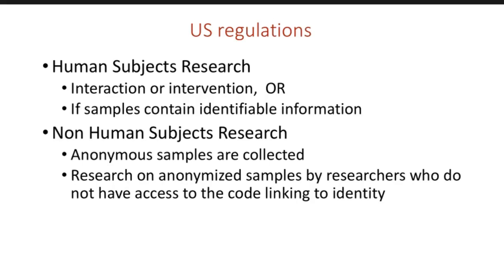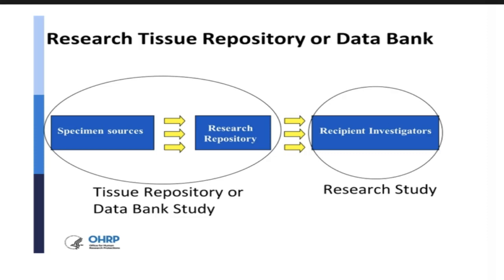Now under the current US regulations, human subject research involves an interaction or an intervention with a subject, or if the researcher obtains samples containing identifiable information. Research that involves anonymous samples that were collected, or research on anonymized samples by researchers who do not have access to the code linking to identity, is considered non-human subject research. This is important for research involving a tissue repository or a data bank. Recipient investigators requesting to do research on specimens stored in a research repository who obtain non-identifiable samples — that is not considered human subject research.